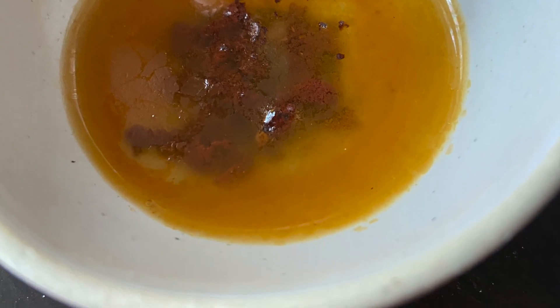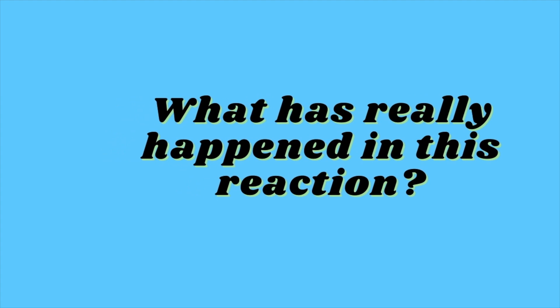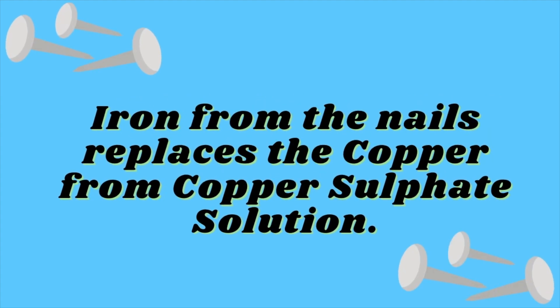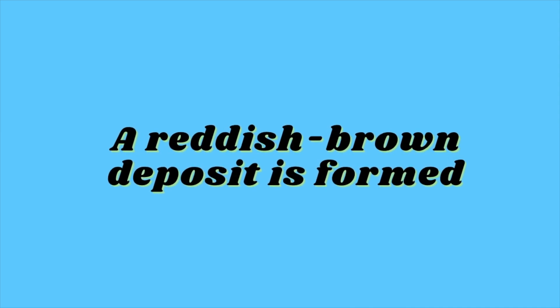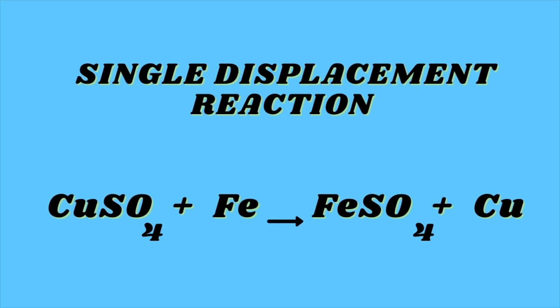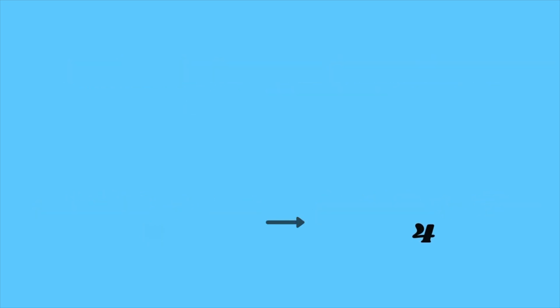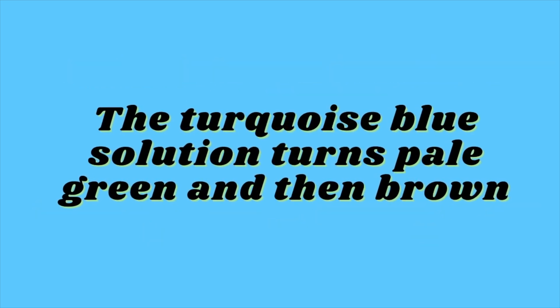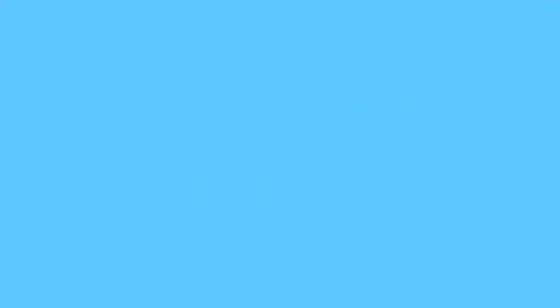So what has really happened in this reaction? The iron from the nails replaced the copper from the copper sulfate solution and formed iron sulfate, while the copper from the copper sulfate solution deposited on the iron nails as a reddish-brown deposit. This is an example of a single displacement reaction, where only one substance — either an element or ion — is displaced or replaced. Copper sulfate reacts with iron and gives ferrous sulfate and copper.